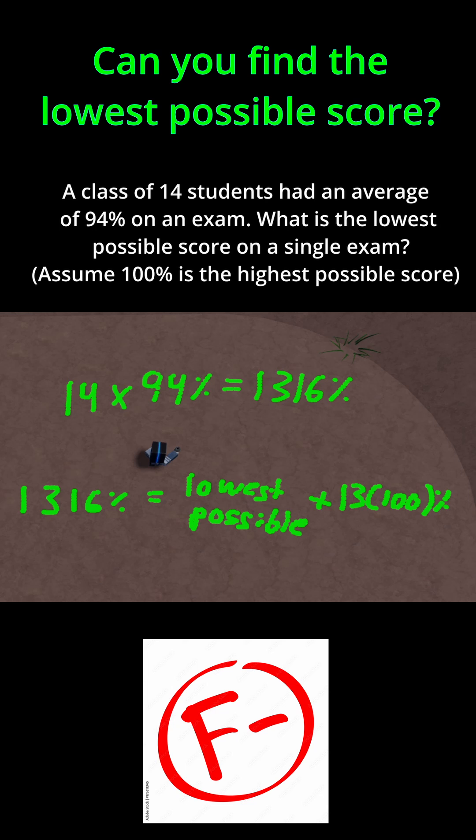Since the other 13 students got 100% on the test, they bring the average up, allowing one student to get the worst score possible. So 13 times 100 is 1300, which is 1300%. Let's subtract 1300 from both sides.